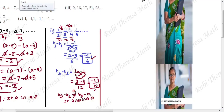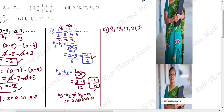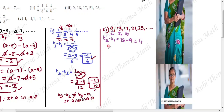Third subdivision: 9, 13, 17, 21, 25, and it goes on. Check T2 minus T1: second term minus first term is 13 minus 9 equals 4. So the common difference here is 4.